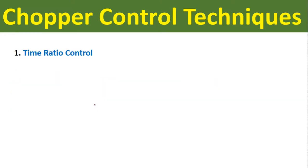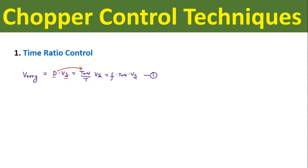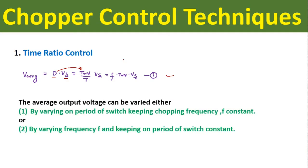First one is time ratio control. We know that the average output voltage of the chopper is given by duty ratio D into DC input voltage Vs. This duty ratio is equal to the on period of the switch divided by the total chopping period T. We know that one upon time period is equal to frequency, so this average output voltage equation can be written as f into Ton into Vs — this is equation number one.